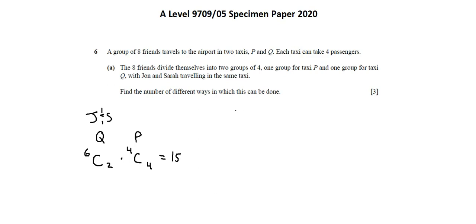The other possibility is that John and Sarah go in taxi P. Taxi P will be six choose two, and taxi Q will be four choose four, which again will result in 15 options. When we add 15 plus 15, we arrive at 30 different ways in which this can be done.